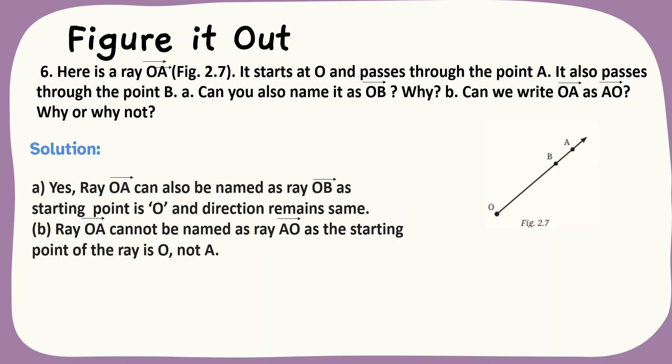Let us go to question number six. Here is ray OA, figure 2.7. It starts at O and passes through point A. It also passes through point B. Can you also name OB, ray OB, why? Can we write OA ray as AO ray? Why or why not? First one. Ray OA can also be named as OB because starting point is O for both these rays, OA and OB. And the direction remains same.